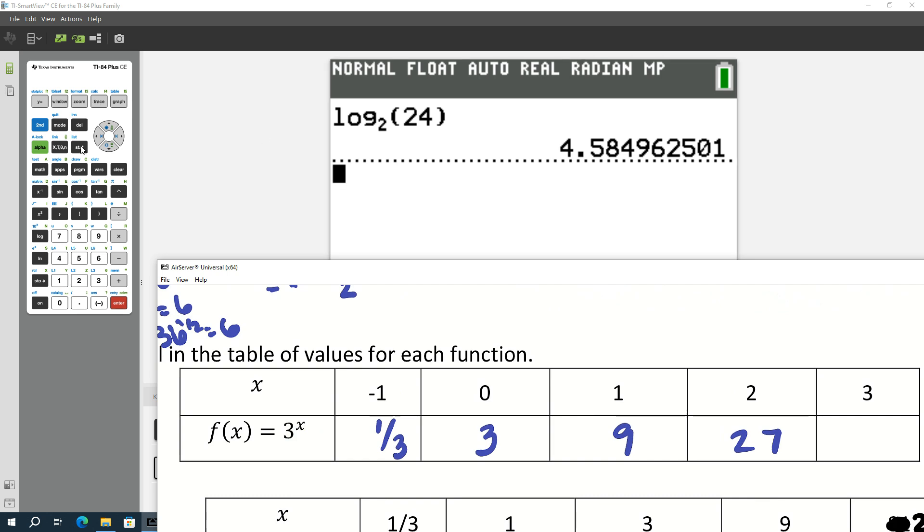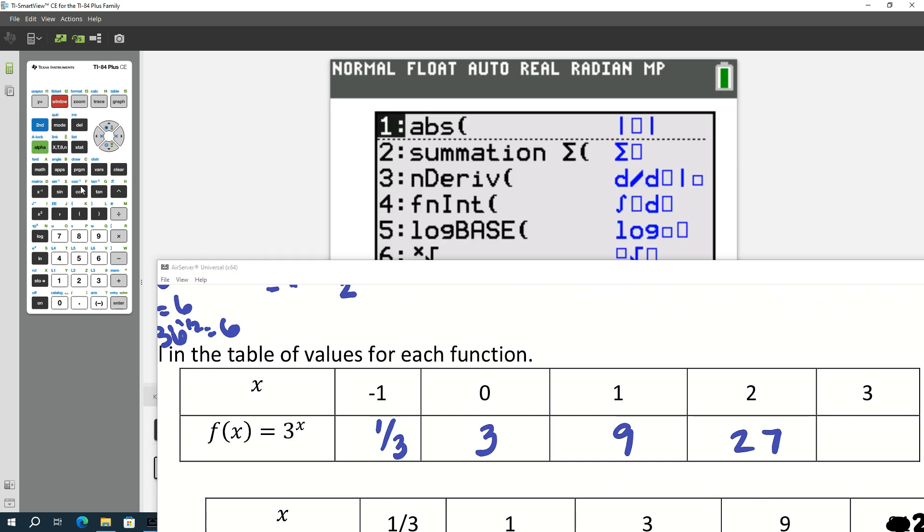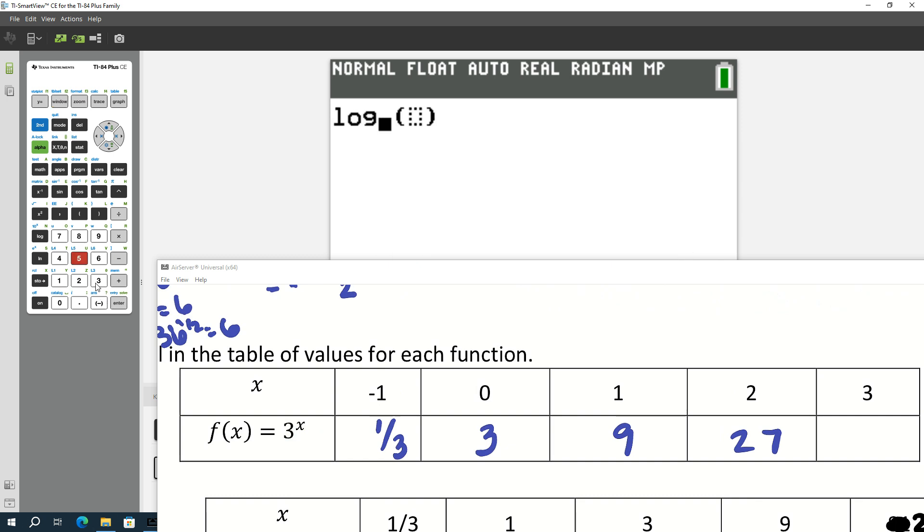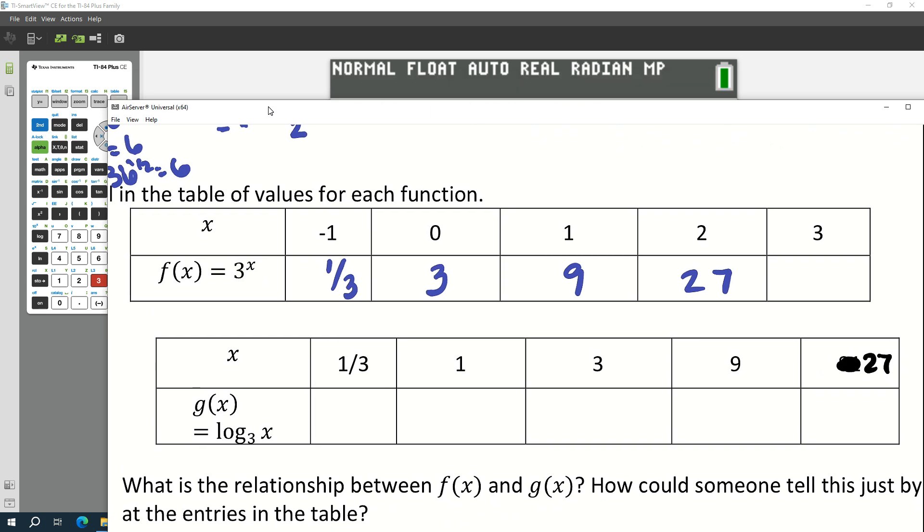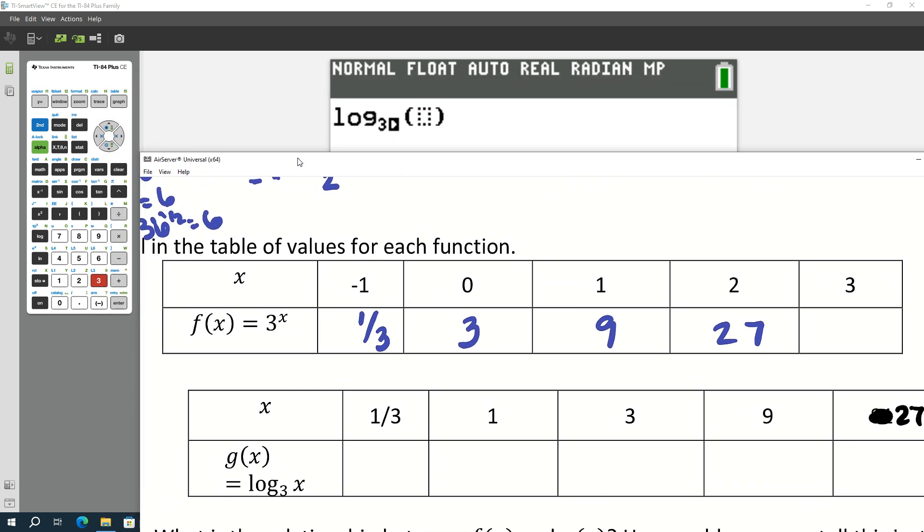All right, and then either using your calculator or using your brain, fill in for log base 3. Now if you want to do it in the calculator, don't forget it's alpha window number five. And then you would make the base 3 and you would just put in those values. Up to you, either in your head or on the calculator. I don't care, but know how to do it one way, please. Oh, I messed up on this table. Let me fix that. If you copy my table for f, it was wrong.